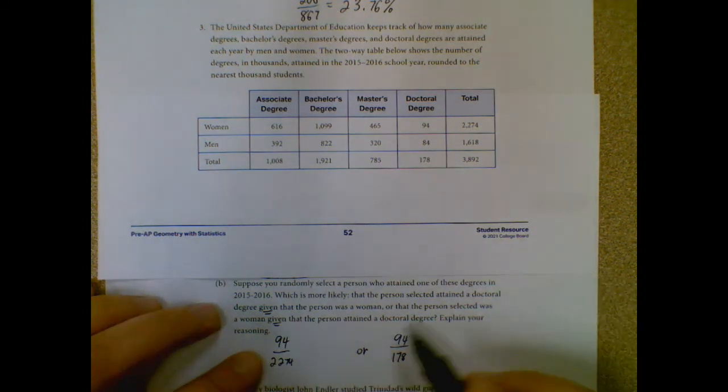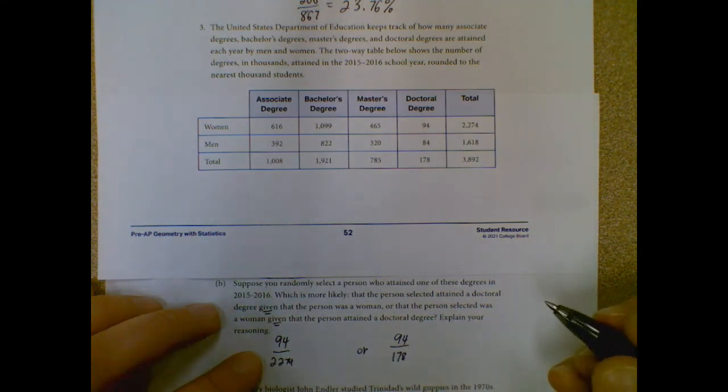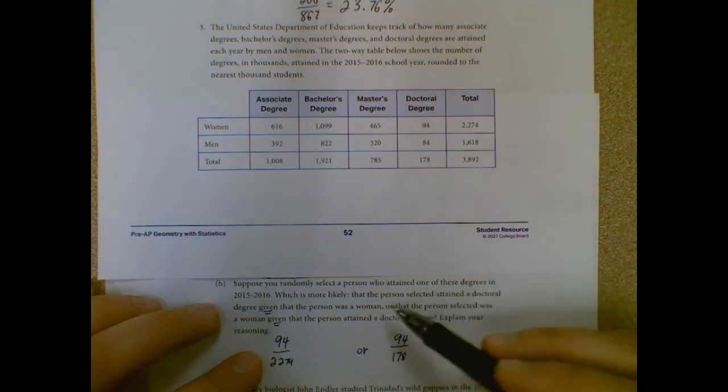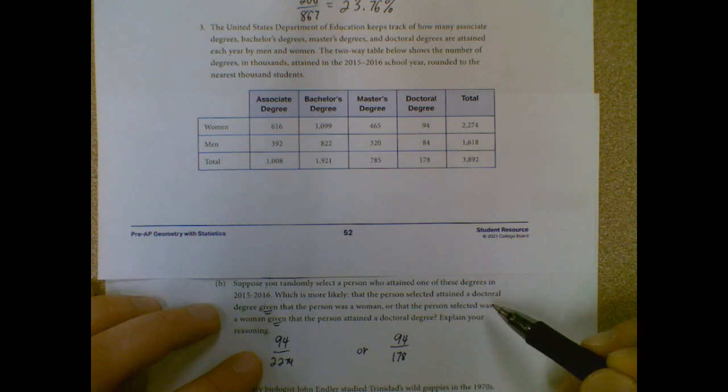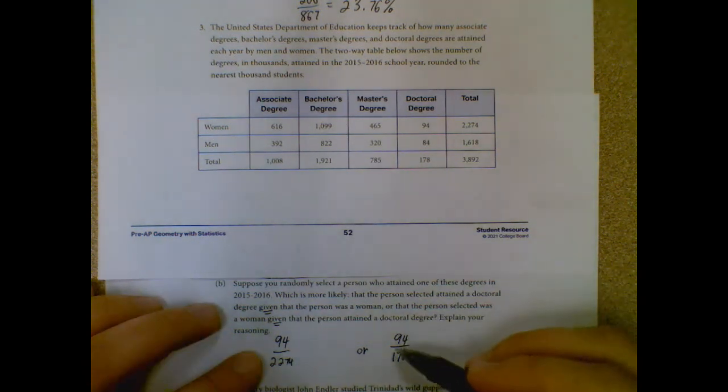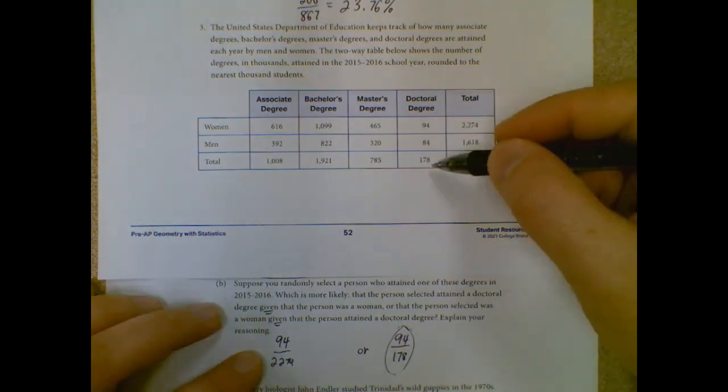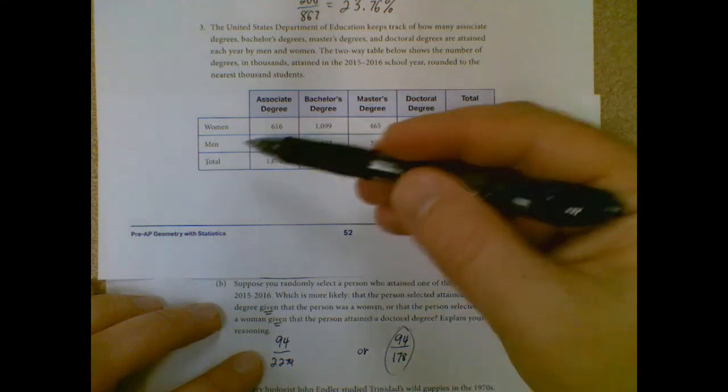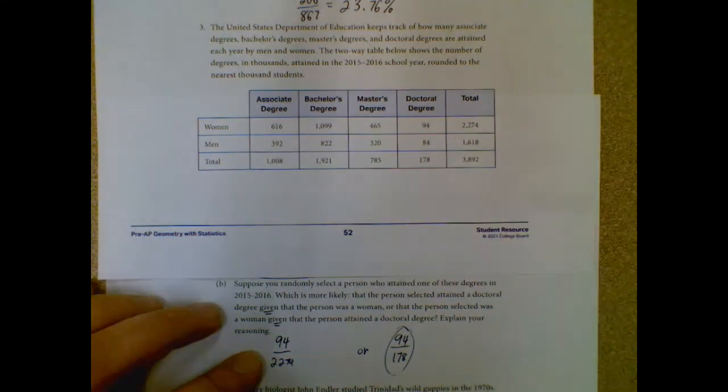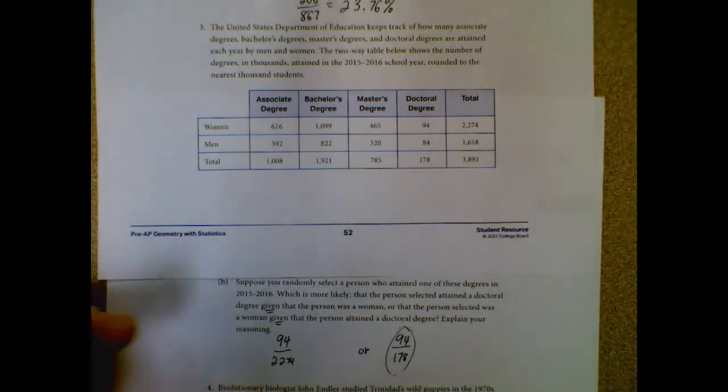Explain your reasoning on this one. It should be more likely in this scenario, because they're dividing by a much smaller number of how many doctoral degrees they give out than how many women overall were in this study. All right, that's question three.